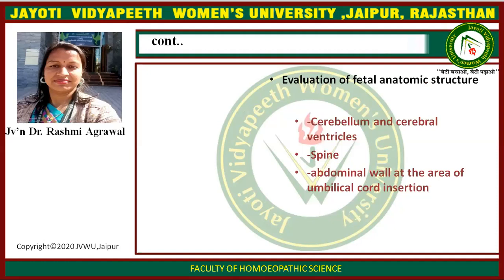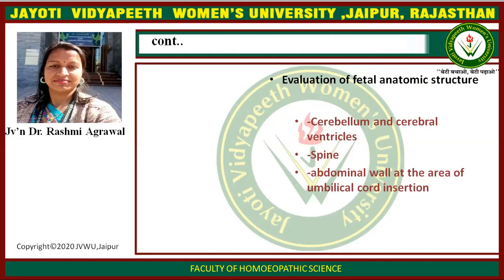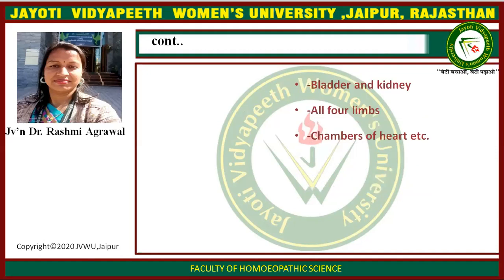Evaluation of fetal anatomic structures is also done in the second and third trimesters, including the cerebellum and cerebellar ventricles, spine, abdominal wall at the area of umbilical cord insertion, bladder, kidneys, all four limbs, and chambers of the heart. These help determine fetal position during delivery.